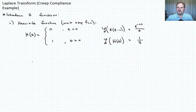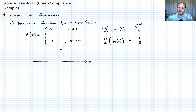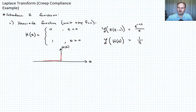We can easily graph that. So there's t and h(t): the function is 0 for all time before 0, and at t equals 0 it instantaneously jumps to a value of 1, and then it stays at that constant forever.